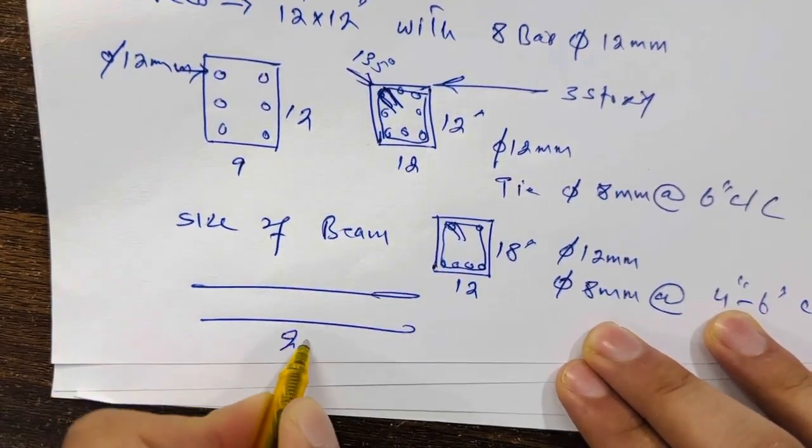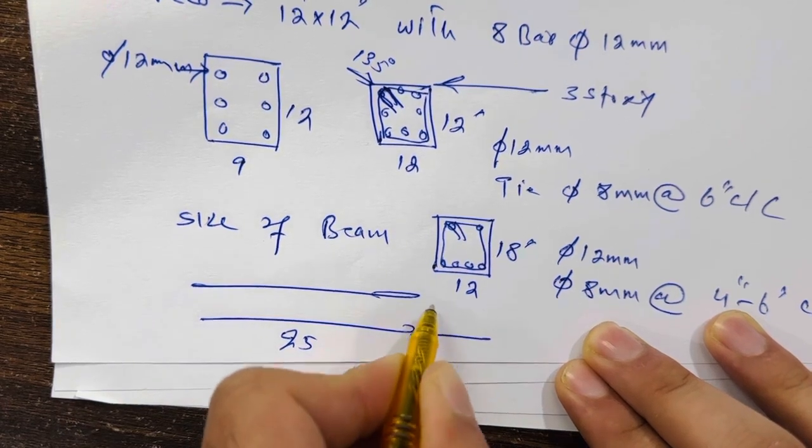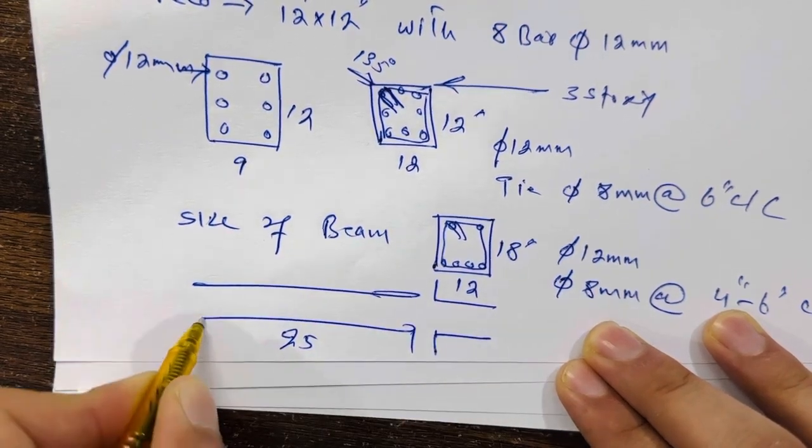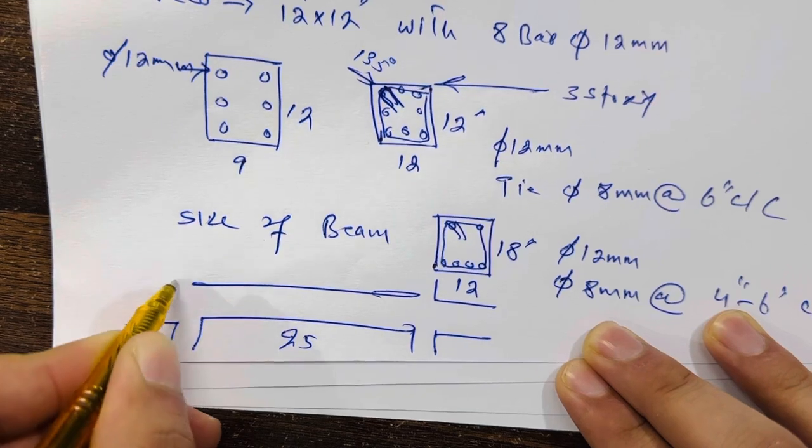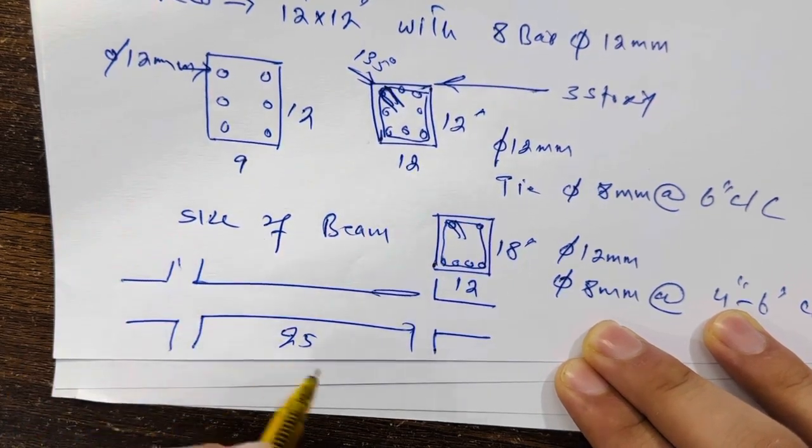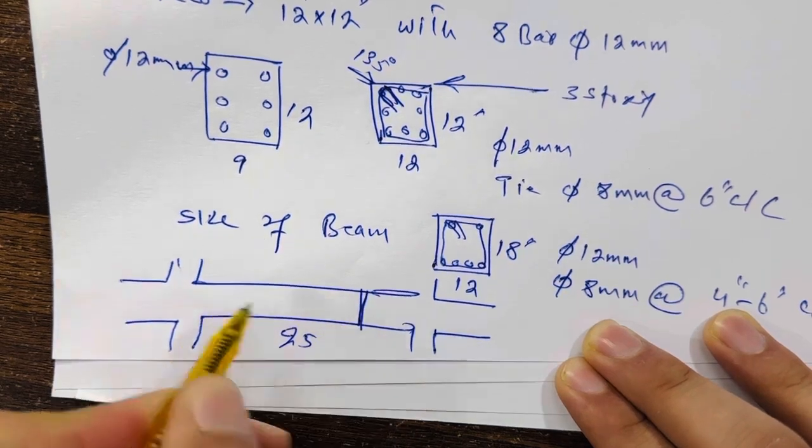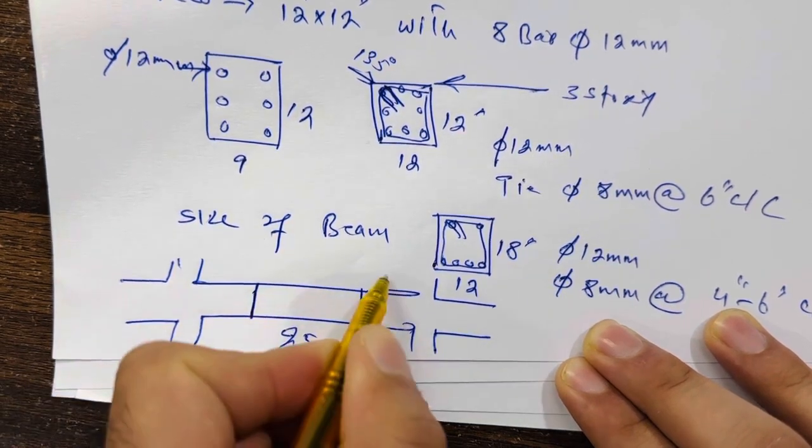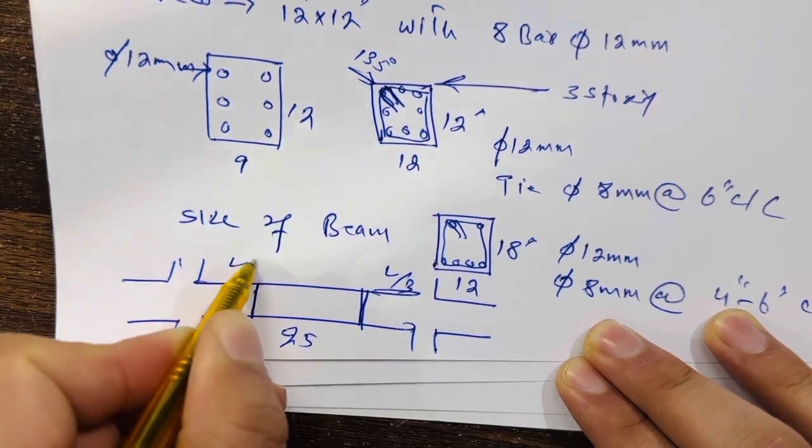This is long section. The span is 25 feet. This is one column you can see here, this is the other column. Use here the spacing up to L by three distance - L by three, also L by three.